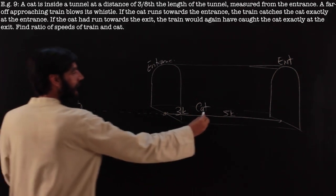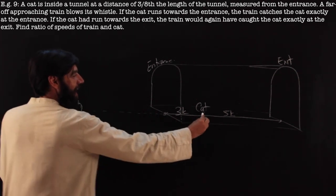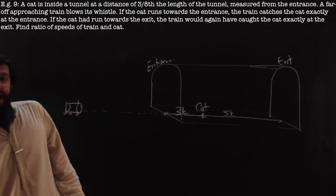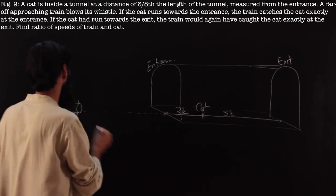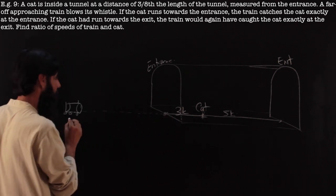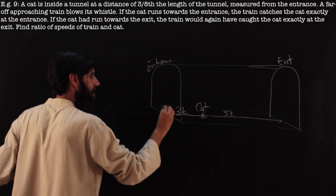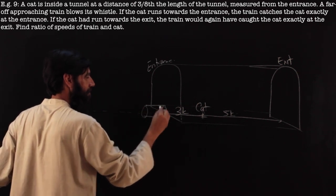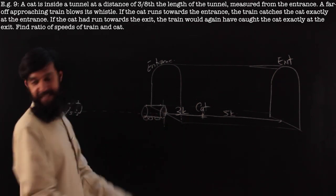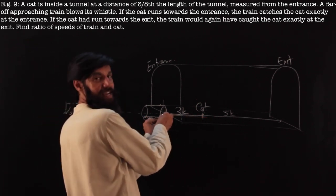Now, if the cat runs towards the entrance, the train catches the cat at the entrance. If the cat runs towards the exit, the train again catches it at the exit. So how do we handle this? In the time the train reaches the tunnel — that is, from its starting point the train has reached the tunnel entrance — let us say that is our starting point for the solution. In this time, the cat would have run 3K.